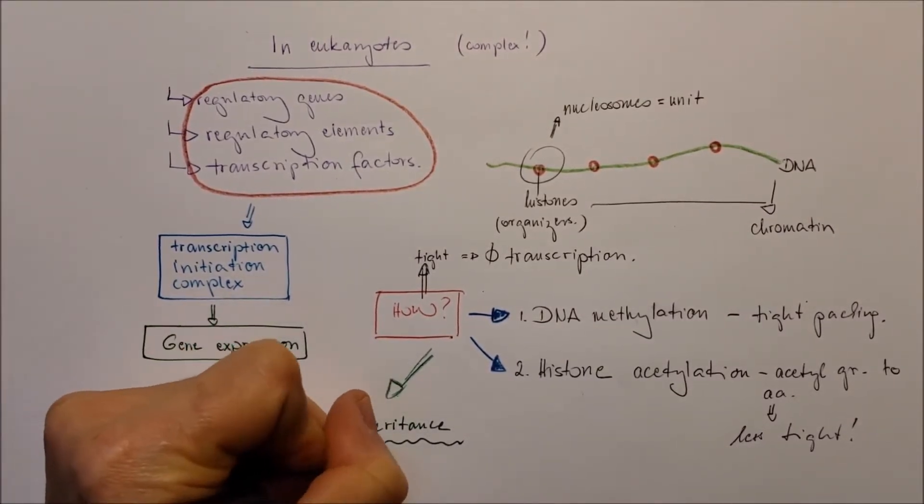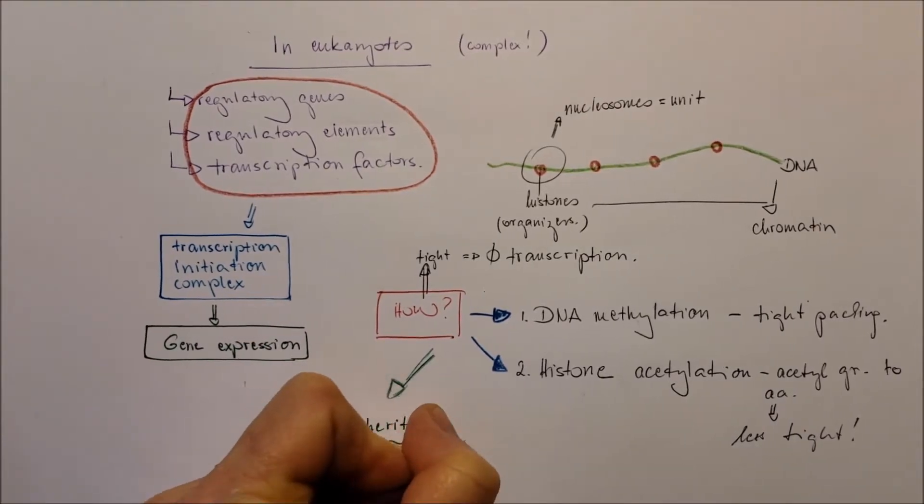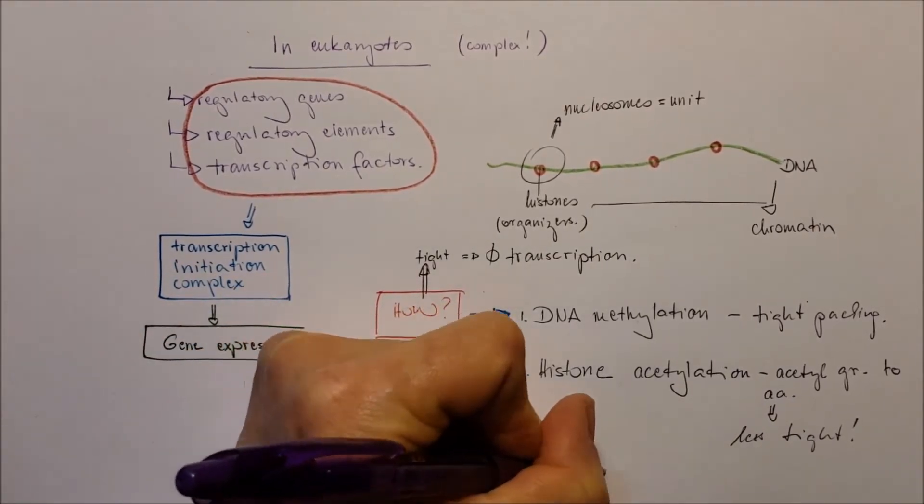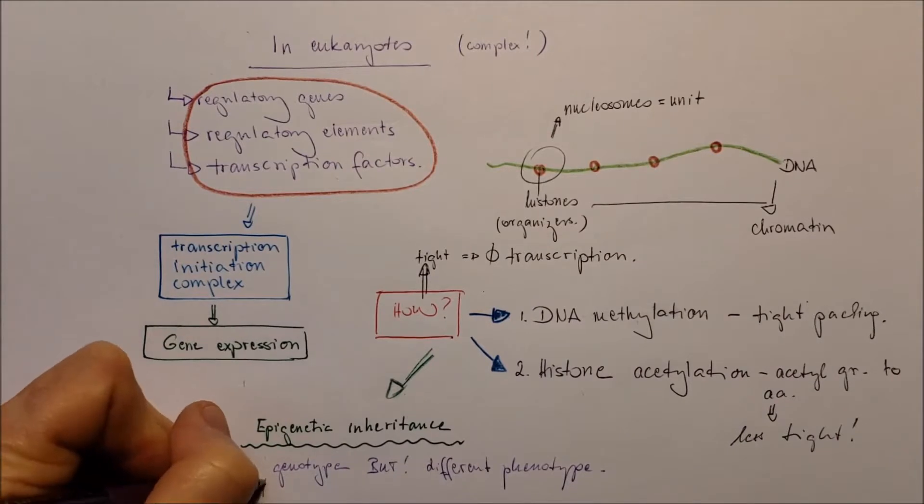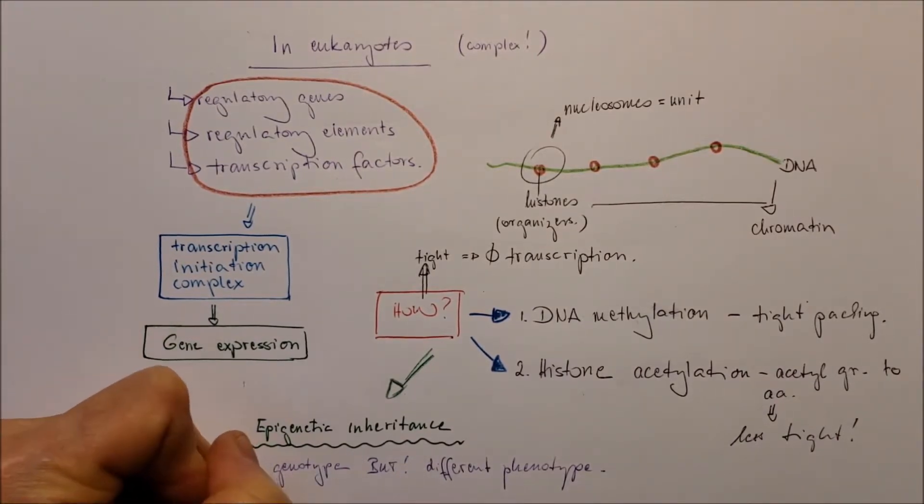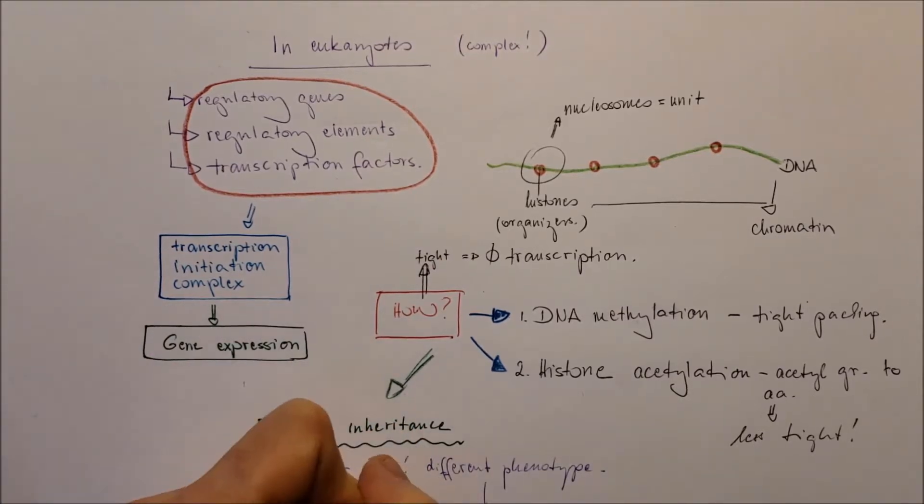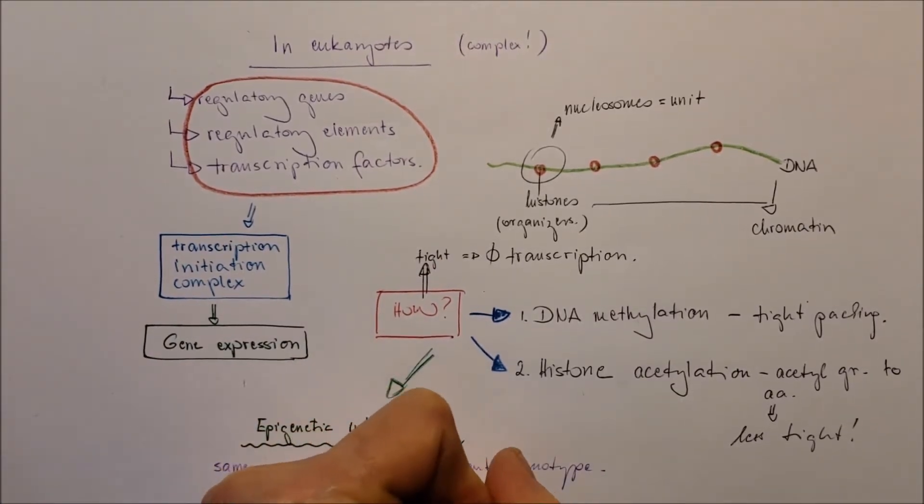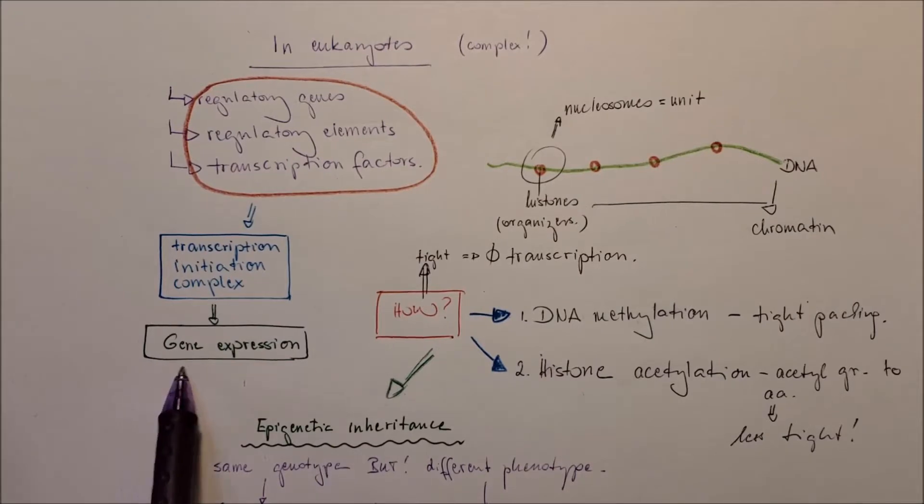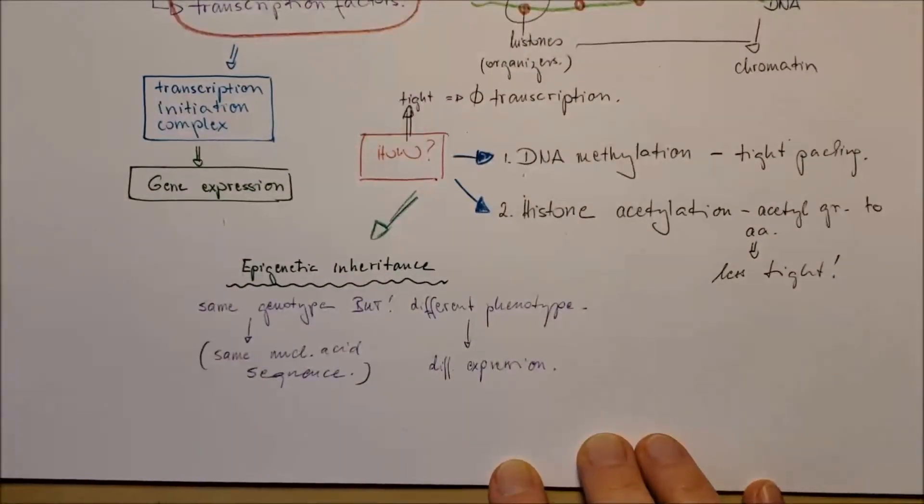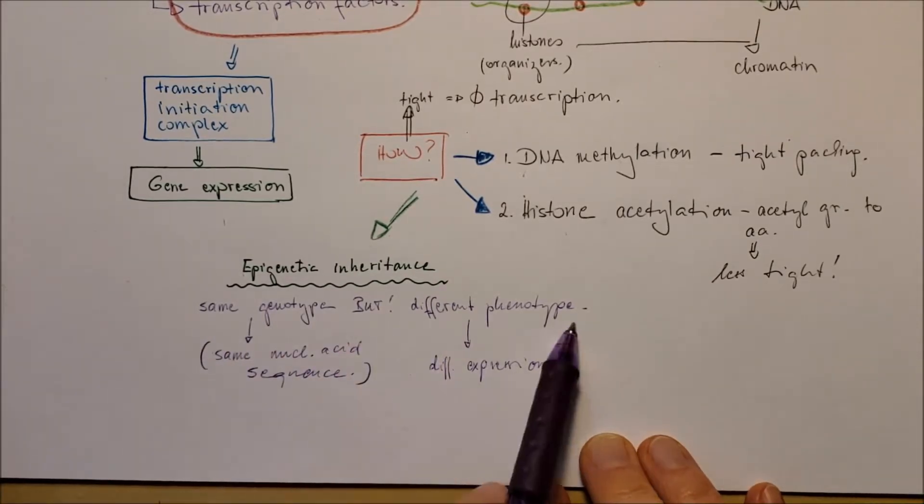From the packaging is going to go to the epigenetic inheritance. That means, even the genes are the same, the phenotype will be different. Because the genotype is the same nucleic acid, but the different phenotypes depend on the different gene expressions based on the methylation and acetylation of the histone and the methylation of the DNA. This is really, really interesting.